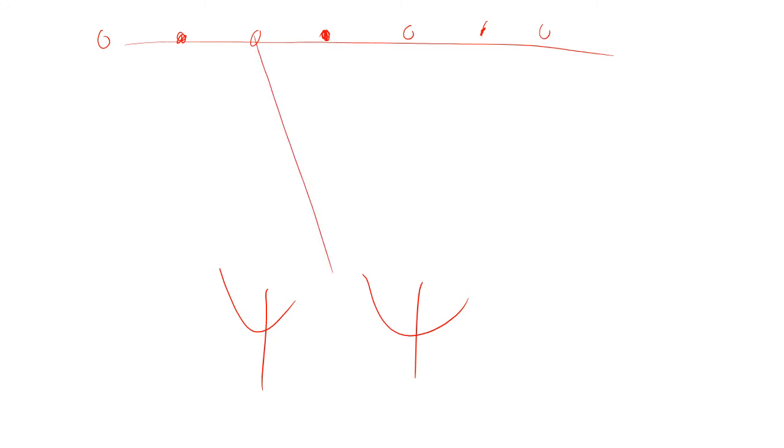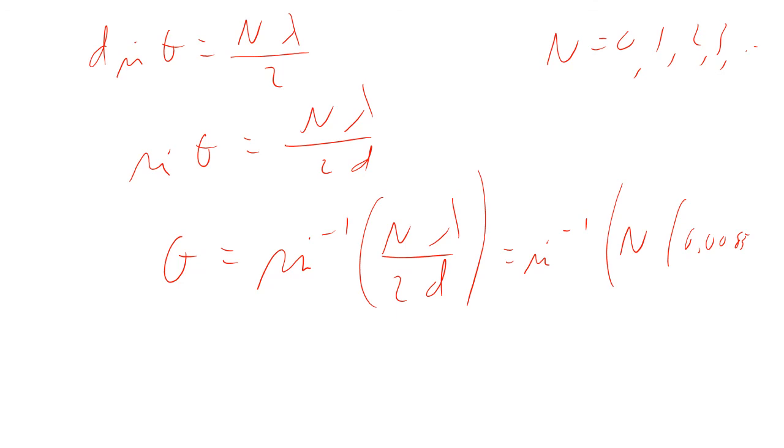And so the question is, what are these angles right here? So d sine theta equals n lambda over 2. So sine theta equals n lambda over 2d. So theta equals inverse sine of n lambda over 2d. And so that would be inverse sine of n, where n is 0, 1, 2, 3, etc. Lambda over 2d comes out to be 0.0085.